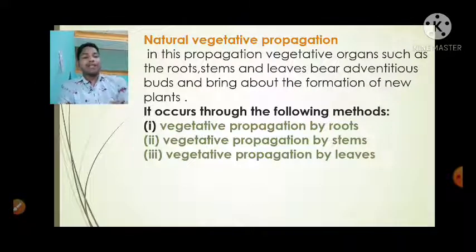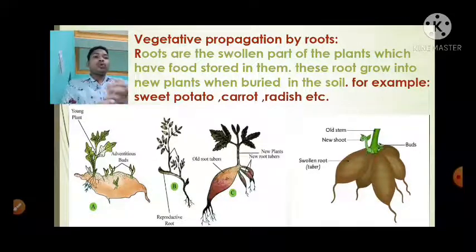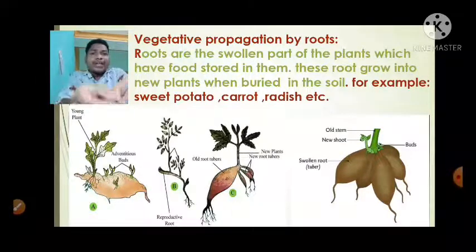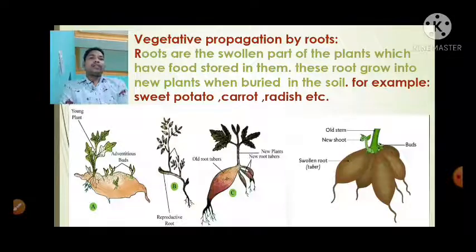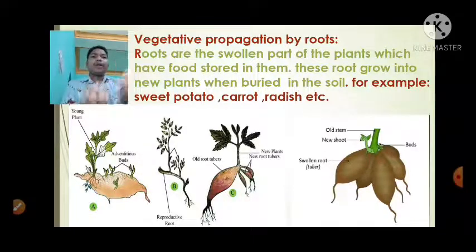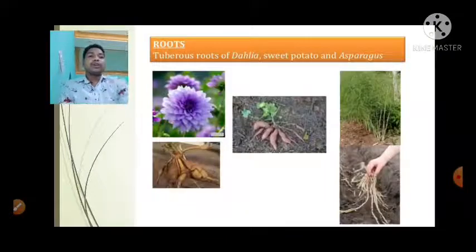Vegetative propagation by roots: roots are the swollen parts of plants which have food stored in them. These roots grow into new plants when buried in the soil. For example, sweet potato, carrot, radish, etc. These are the examples of vegetative propagation by roots.